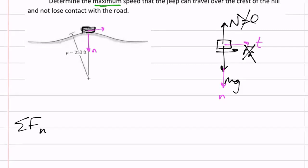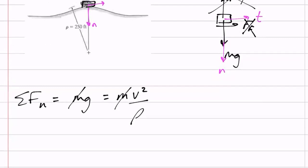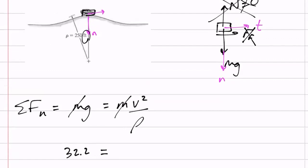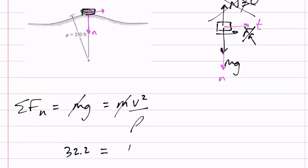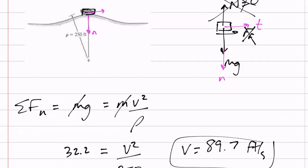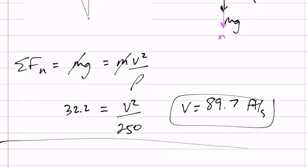So let me sum the forces in the normal direction. I don't have that N — N is equal to zero — so I've just got mg. Sum of the forces equals mass times a-normal. What is a-normal? V squared over rho. So let me go ahead. G is — notice that rho was in feet: 250 feet — so use 32.2 ft/s². Velocity equals 89.7 feet per second. Simple problem, if you realize it was really telling you to set the force N equal to zero.